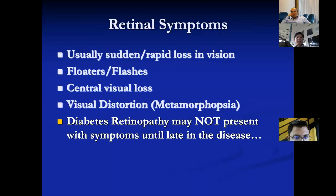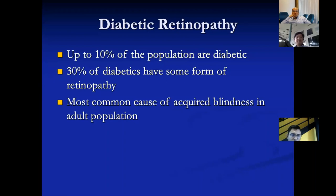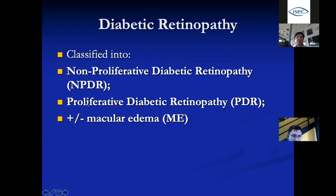Early cases of diabetic retinopathy may not present with symptoms until late in the disease — patients should be examined by eye doctors. About 16% of Malaysians are diabetic, and in cross-section, about 30% of diabetic patients have some form of retinopathy. This is the most common cause of blindness in the adult population. In ophthalmology, diabetic retinopathy is classified into two main types: non-proliferative (no abnormal blood vessels) and proliferative (growth of abnormal blood vessels), both of which can co-exist with macular edema.